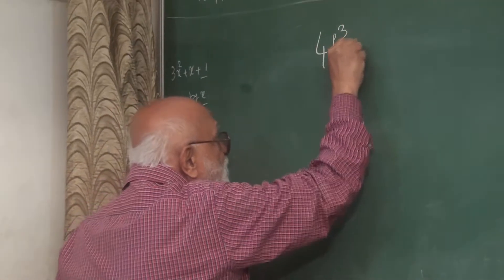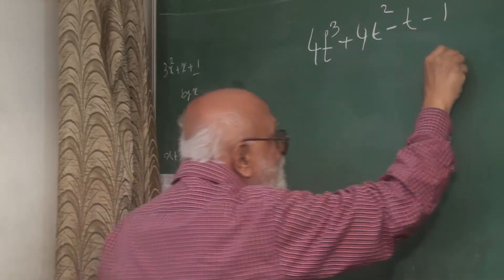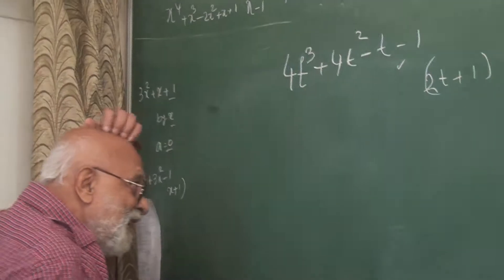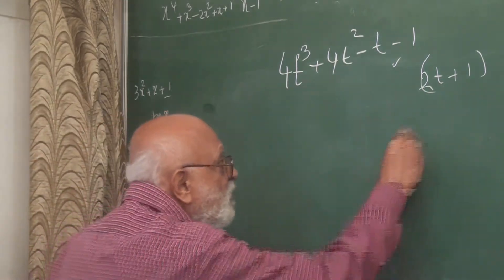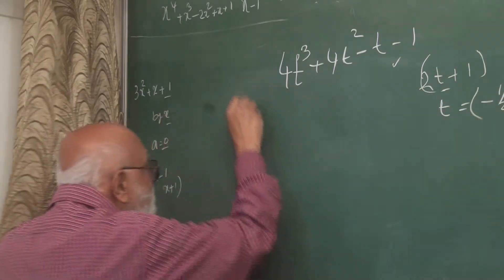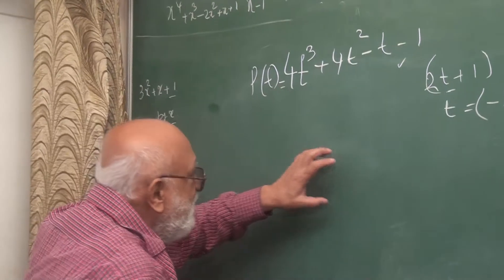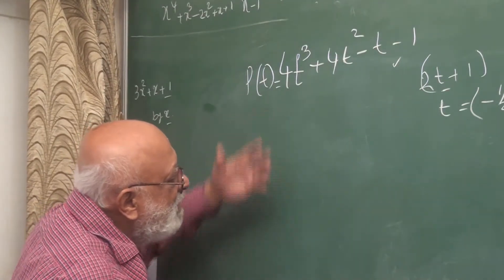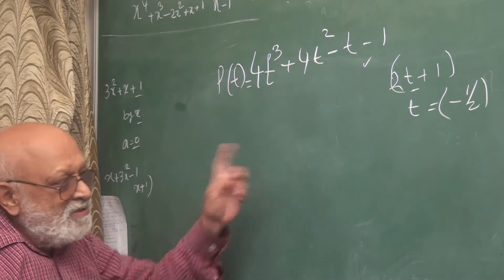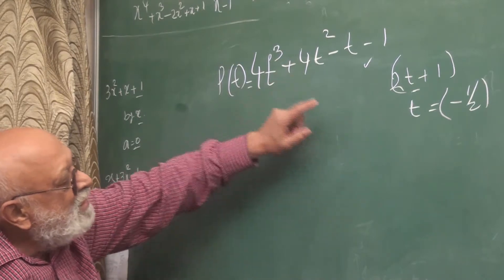We have discussed the polynomial 4t² minus t minus 1, and whether 2t plus 1 is a factor of this polynomial. We said that for that purpose we have to find the value of t equal to minus 1/2, substitute in the polynomial P(t), and show that the remainder becomes 0. I think I purposely made an error to see whether students watching my video could find it out, but I want to now use it for another purpose. Let us do this one all over again.